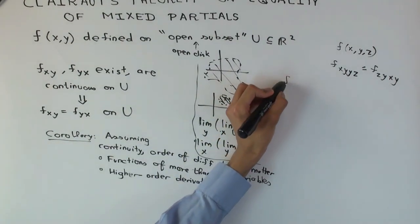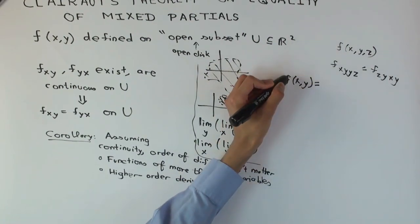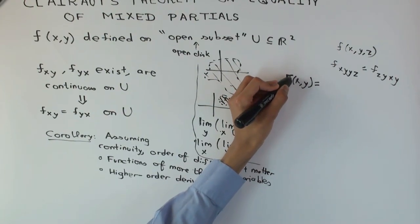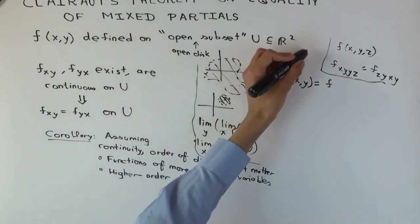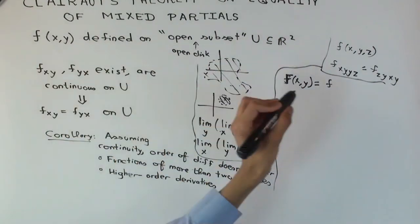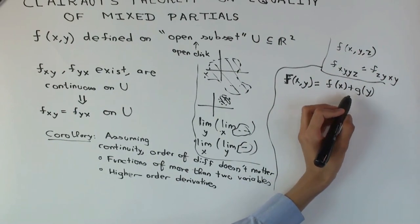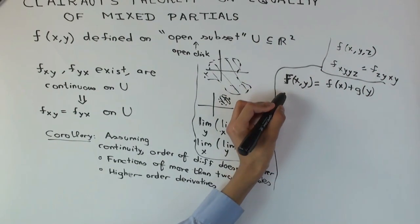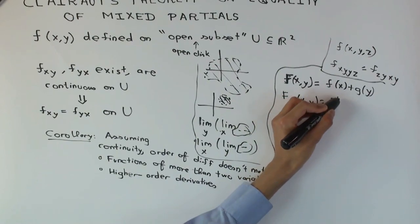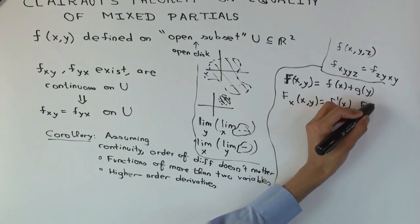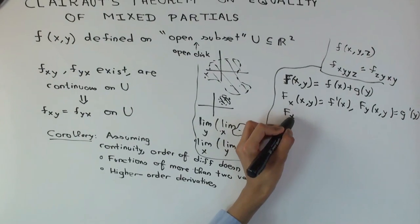If I give you a function, maybe I'll use capital F(x,y) = little f(x) + little g(y). This is an additively separable function. What are the partials? F sub x is f prime x, F sub y is g prime y.